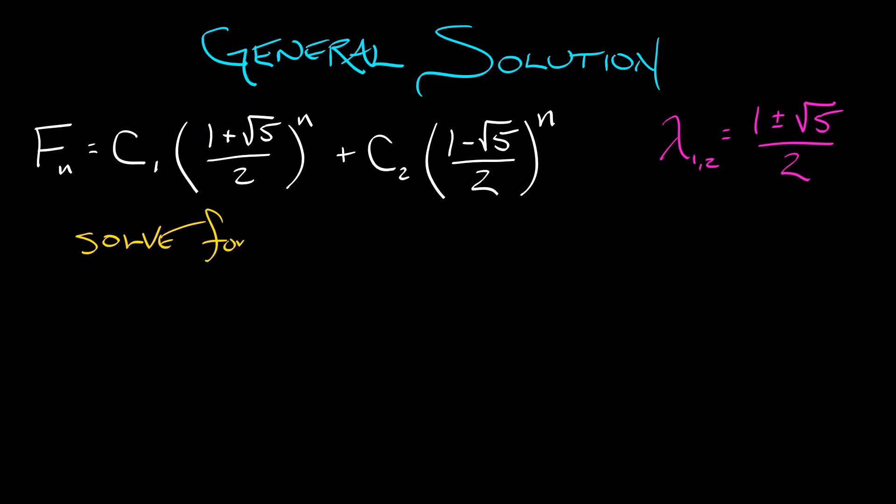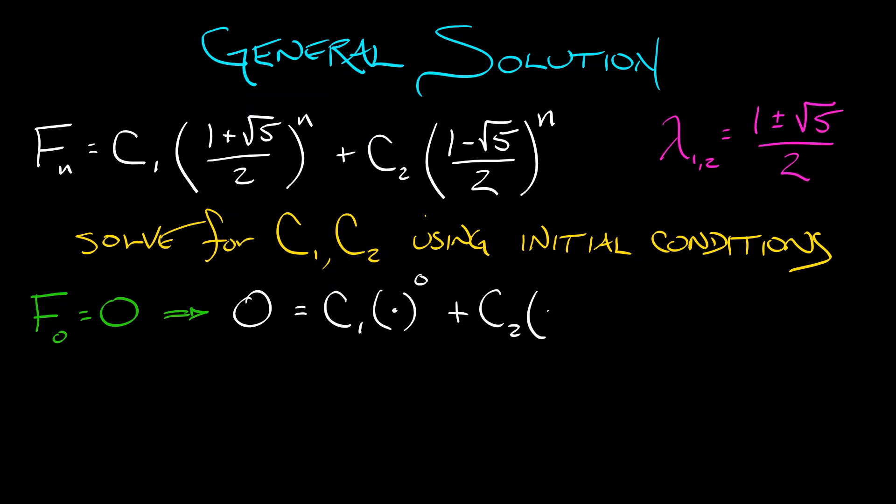Well, okay, but what are those constants? How do we solve for those? Oh, we can use the initial conditions. The first term in the sequence F0 is equal to 0. That means we substitute in n equals 0. And what do we get? We get 0 is C1 times lambda 1 to the 0, plus C2 times lambda 2 to the 0. That is C1 plus C2. That's equal to 0. C2 is minus C1.